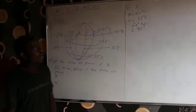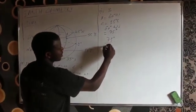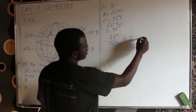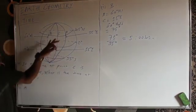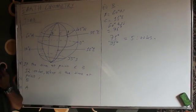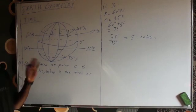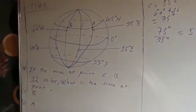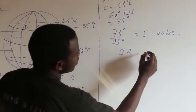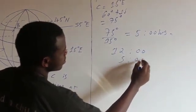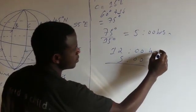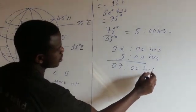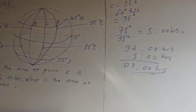So 75 degrees divided by 15 degrees gives 5 hours. That means the difference in hours between point C and B is 5 hours. To calculate the time at point B, I consider that B is on the west side, so I subtract 5 from 12 hours: 12 minus 5 gives 07 hours. The time at point B is 07:00 hours.